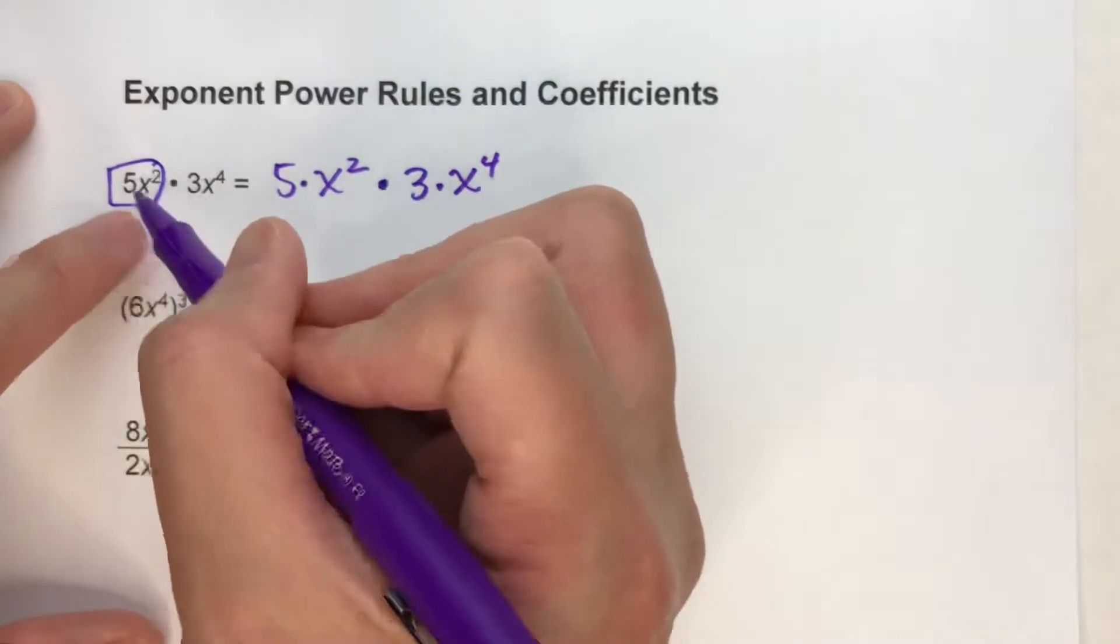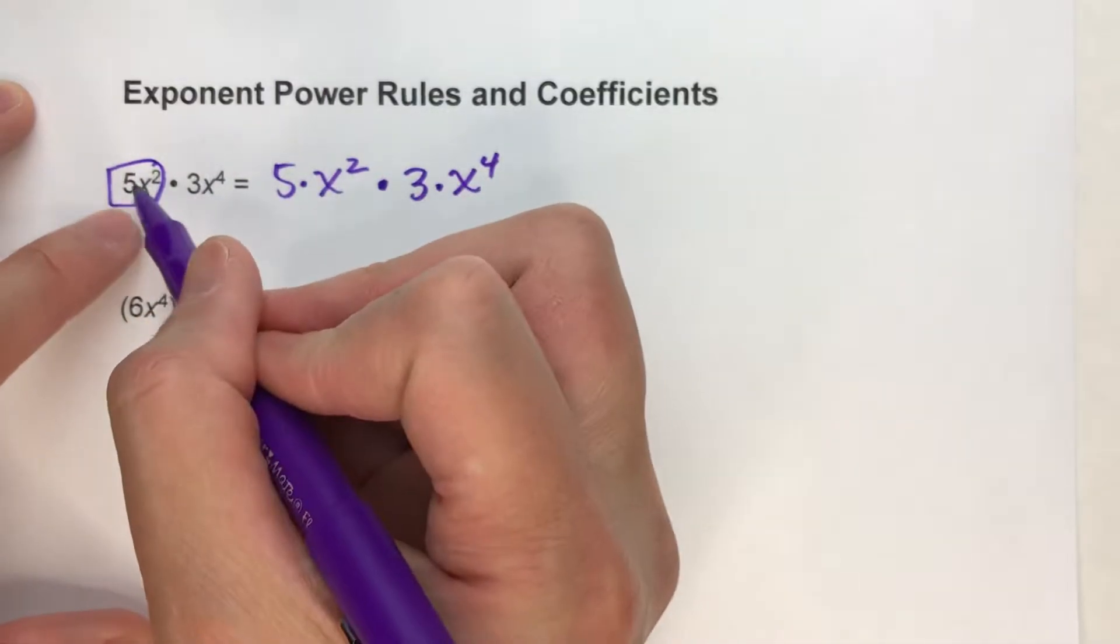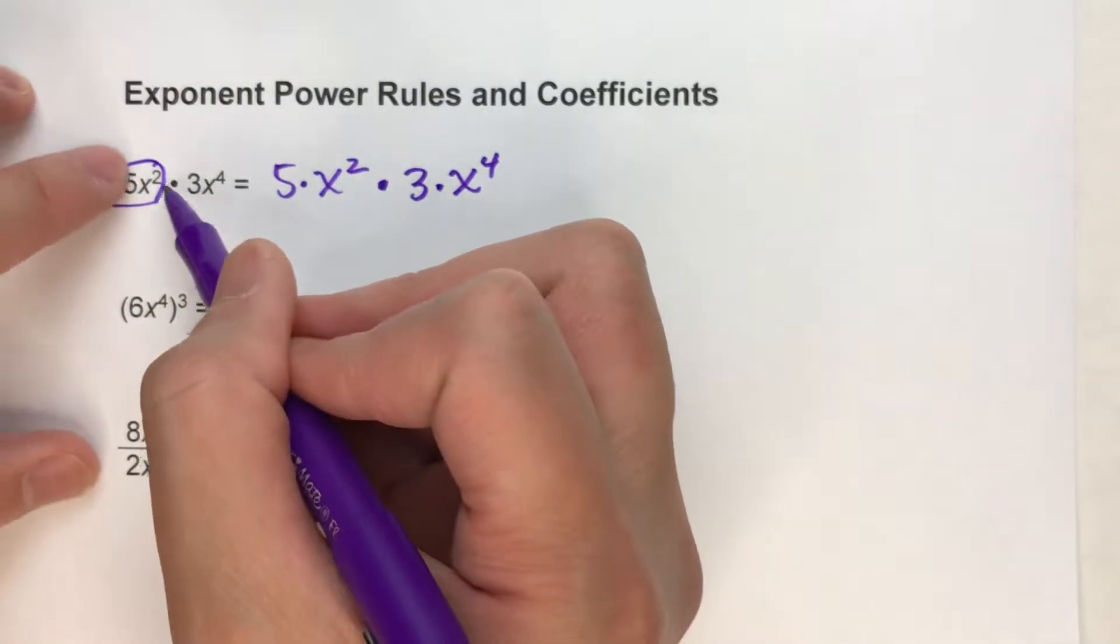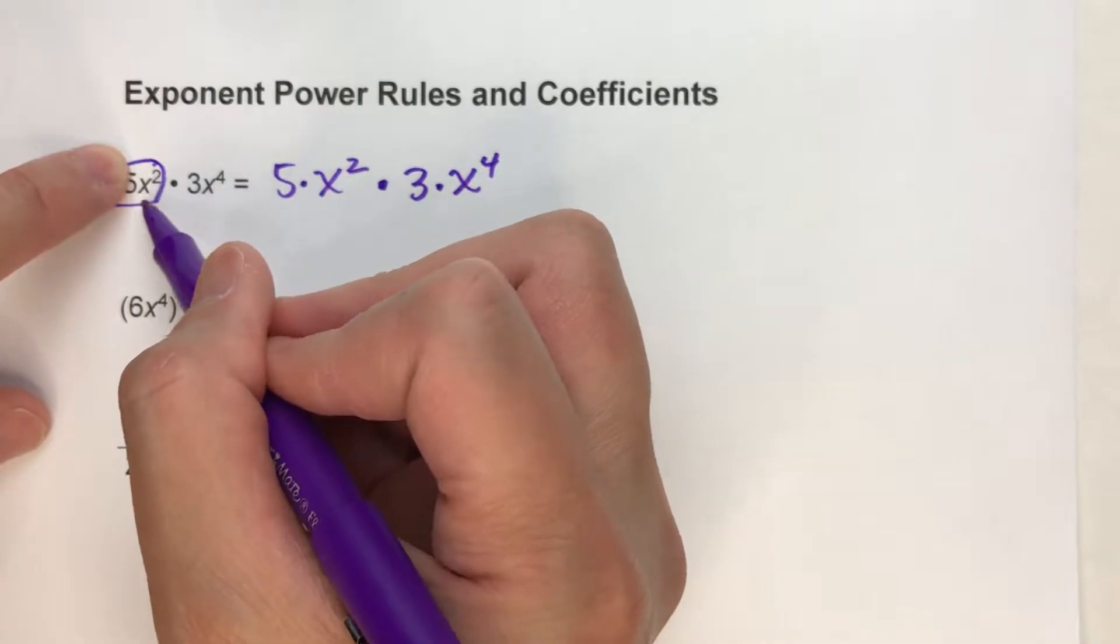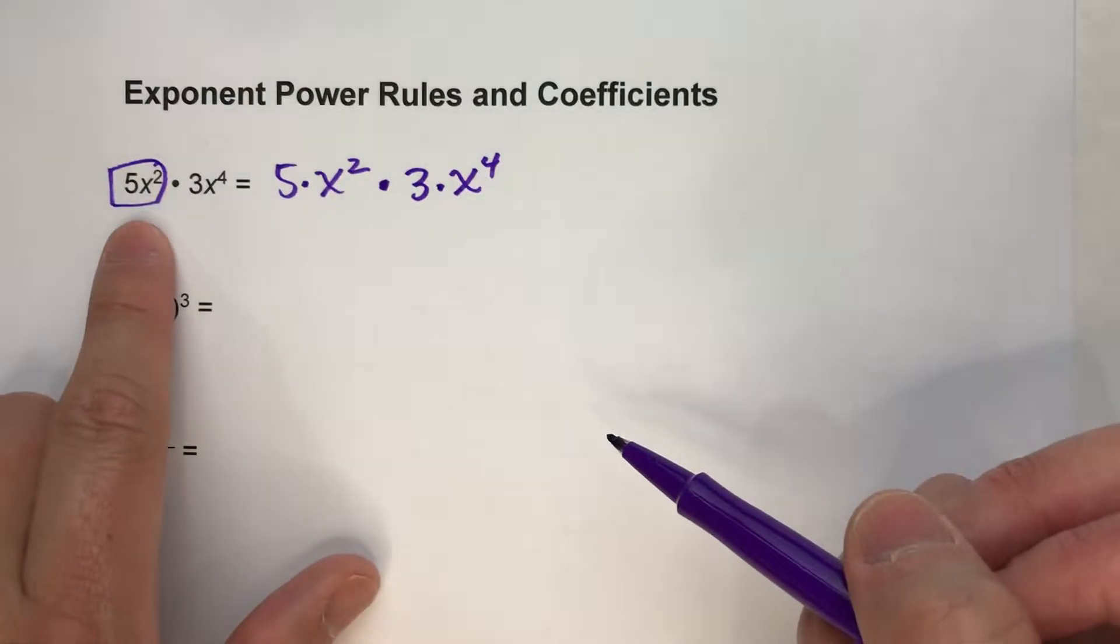But the other thing to remember is when you have a coefficient there, the 5 is not being squared, right? That only the x is being squared in this original problem here.